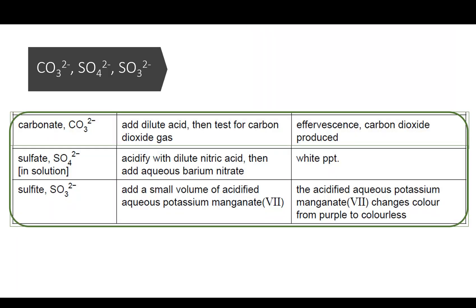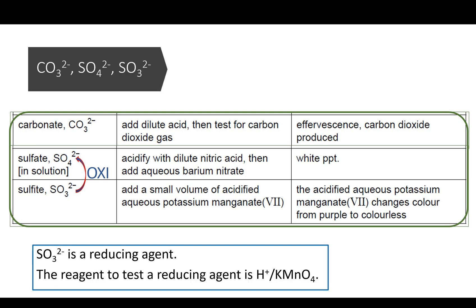Now look at sulfate and sulfite. If sulfate can be reduced to sulfite, sulfite can be oxidized to sulfate. Something that is oxidized is referred to as a reducing agent. Remember the test for a reducing agent? We must use an oxidizing agent to test for a reducing agent, such as acidified potassium manganate 7, which is a very strong oxidizing agent.